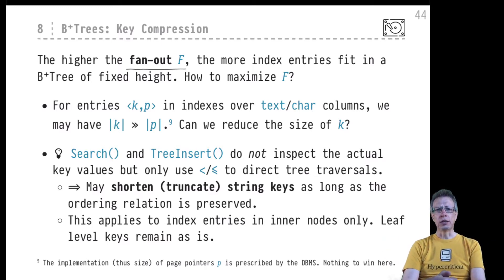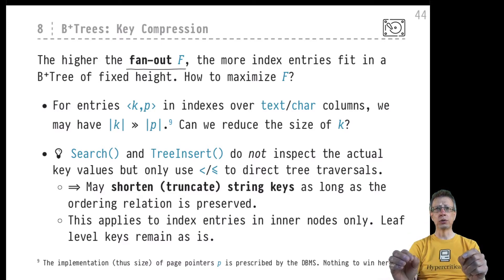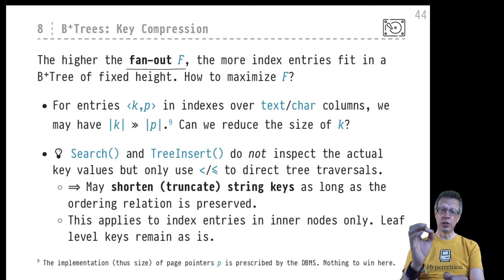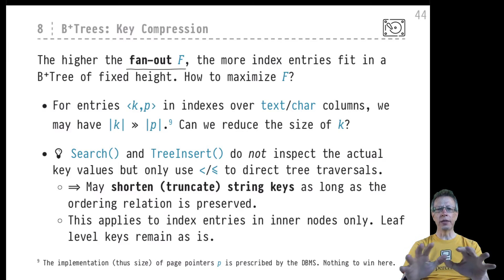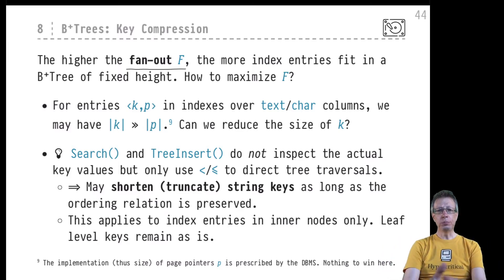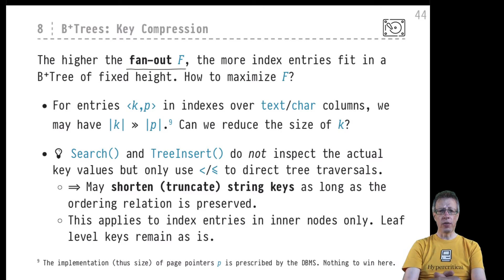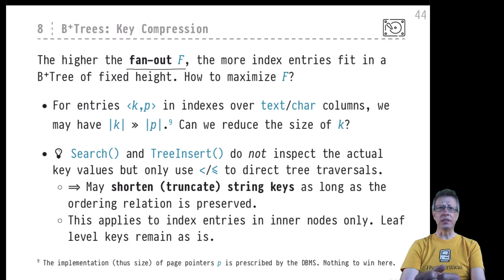We are aiming for wide trees that are rather shallow instead of more narrow trees that would be rather deep. The binary search tree with only two pointers sticking out of inner nodes — where F equals two — is exactly what we are not after. Deep trees mean lots of IOs while we traverse from root to leaf level. We'd rather have shallow trees with very few IO operations while searching for our keys.